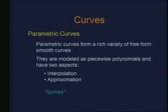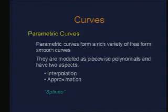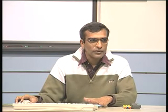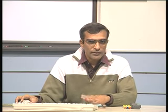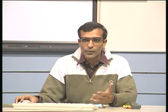Parametric curves are modeled as piecewise polynomials. There are two aspects: they could be interpolating curves, as we observed in cubic splines, or they could be approximations to a certain shape defined by certain input. The idea is that you give an approximation of the shape you want to obtain, and the curve drawn approximates that.